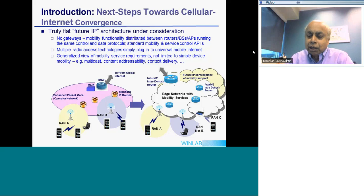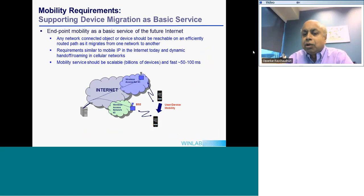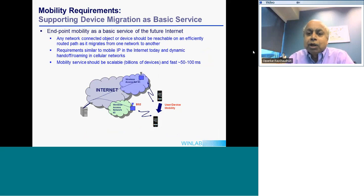One of the most basic requirements is supporting device migration as a basic service. Instead of having a specialized local area network — today's cellular network or 802.11 with handoff and roaming capability — the internet should provide mobility as a basic service. This was already in the vision of IPv6, and Mobile IPv6 is widely implemented although not yet widely used. One of the reasons it was never widely deployed is that the underlying architectural decision to use address-based mobility leads to many problems.